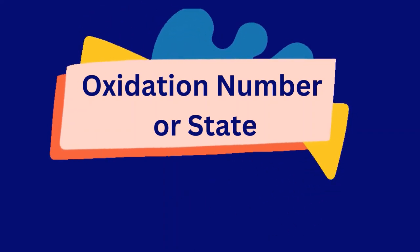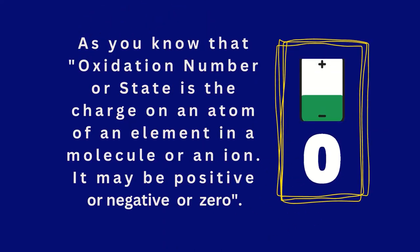Oxidation number or state, as you know, is the charge on an atom of an element in a molecule or an ion. It may be positive or negative or zero. Calculate the oxidation number of sulfur in SO4 minus 2.